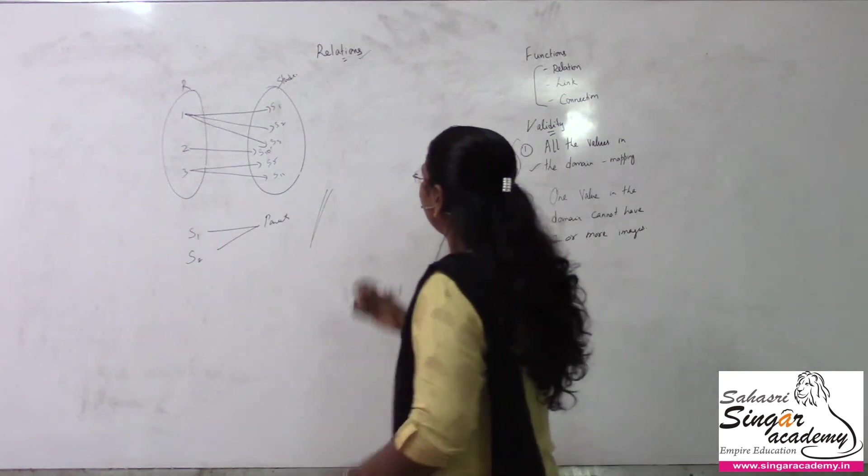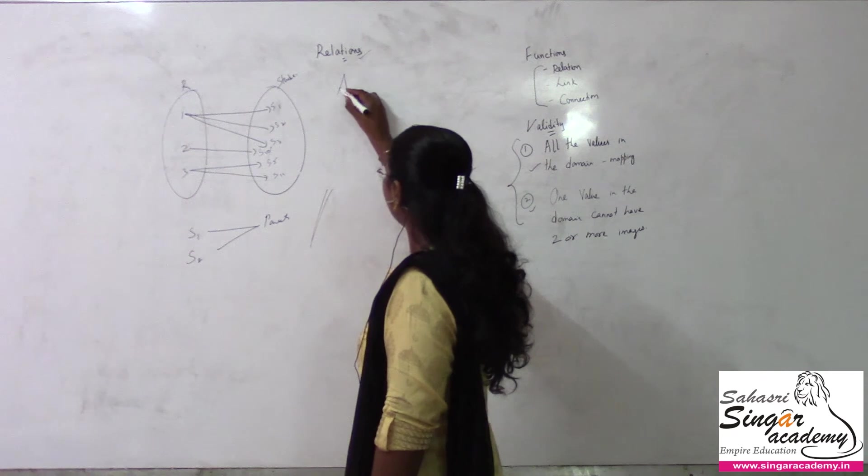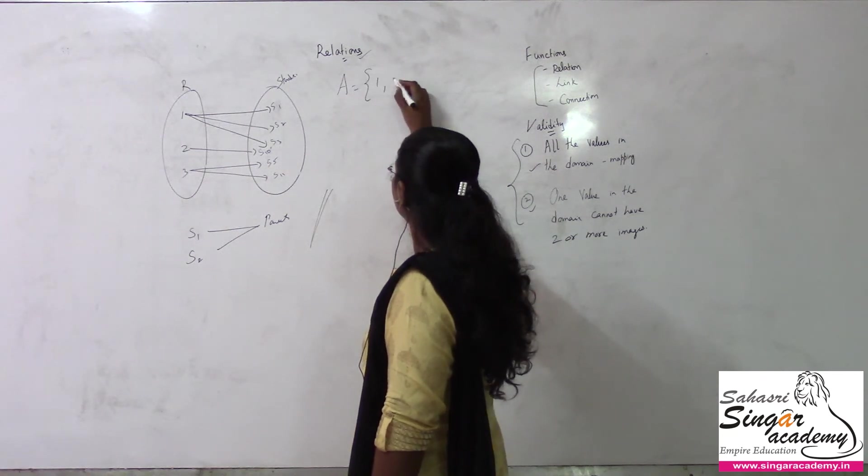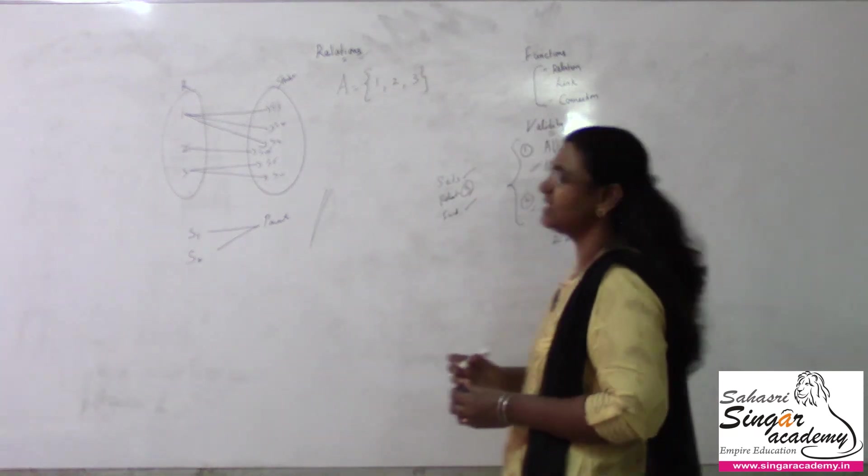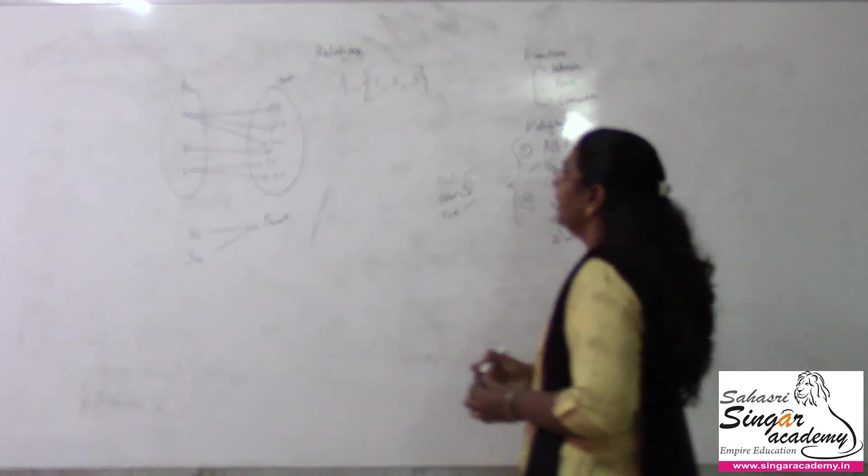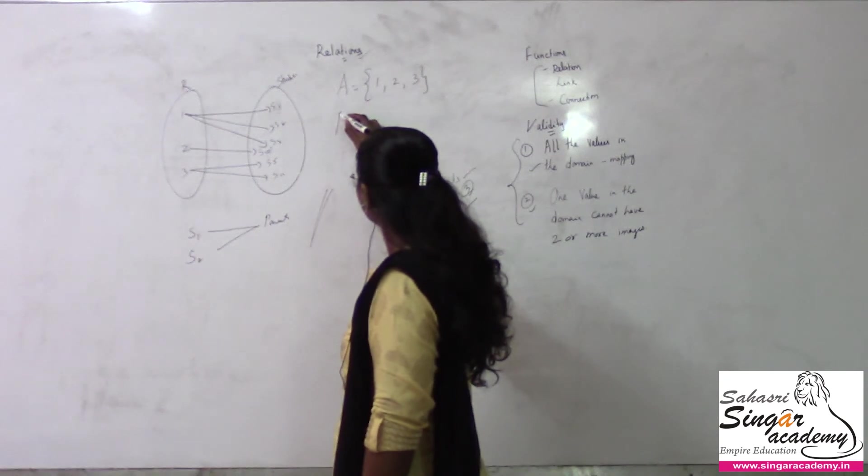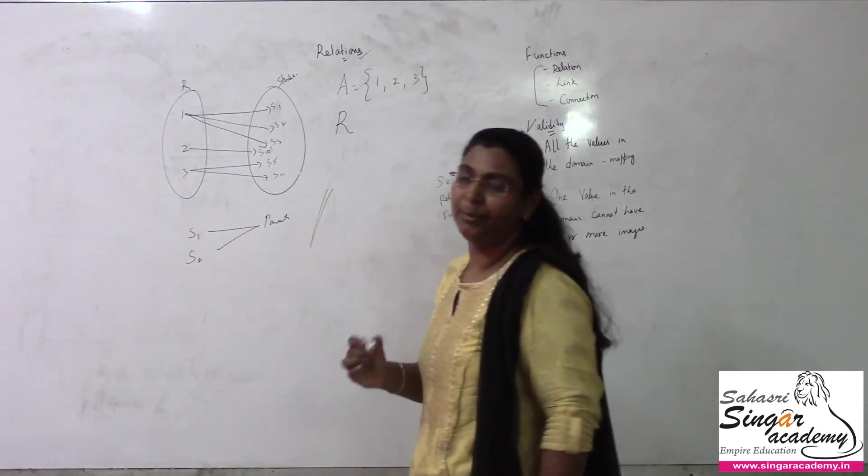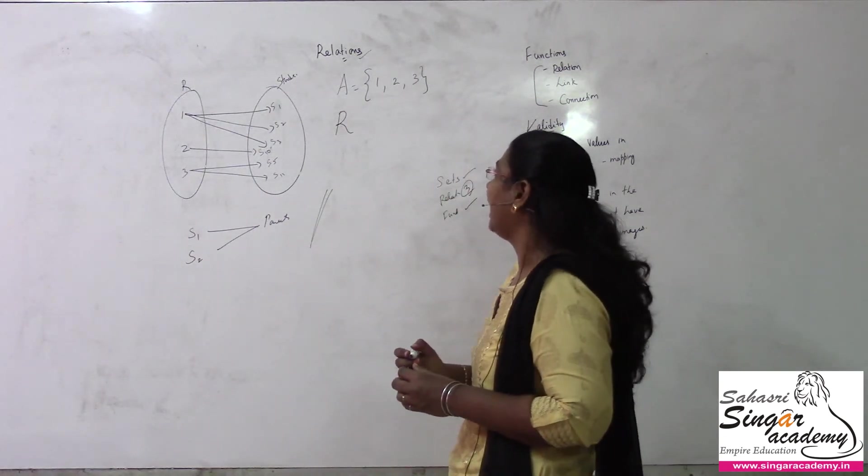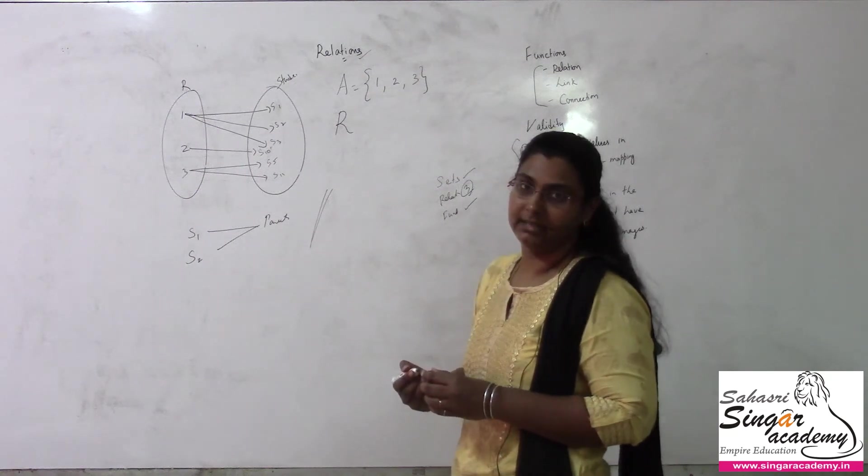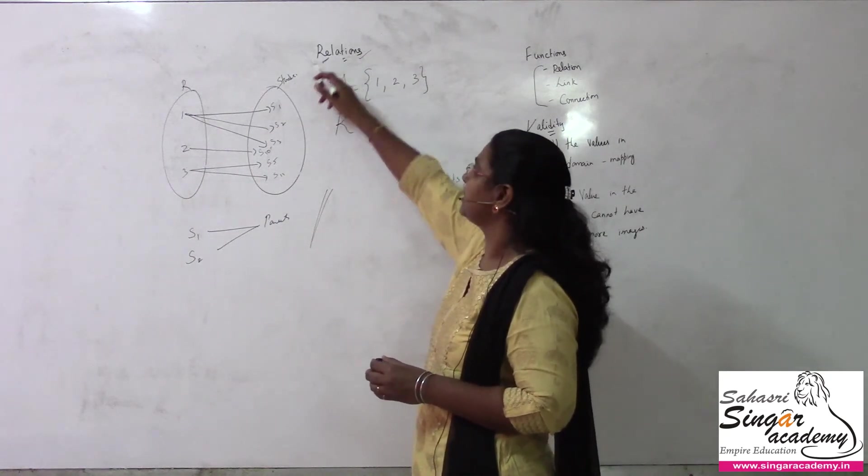How do we define a set? A will be some set - one, two, three. Any set. How do we define a relation? We use the notation capital R for relation. We're saying capital alphabets are used for defining a set, which means we can represent relations similarly.